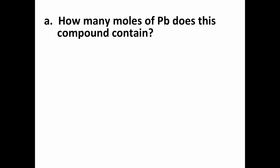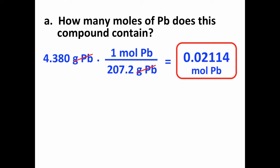Okay, so the first thing we're going to do is determine how many moles of lead the compound contains. We start with the number of grams of lead we know we have, and we're going to convert this into moles. We look on the periodic table and see that the atomic mass of lead is 207.2 grams. One mole of lead equals 207.2 grams of lead. We set up our conversion factor to cancel out grams of lead, and we do the calculation and we find that this is 0.02114 moles of lead.